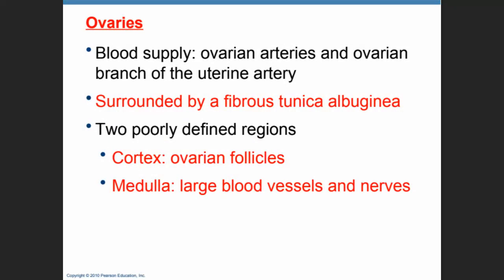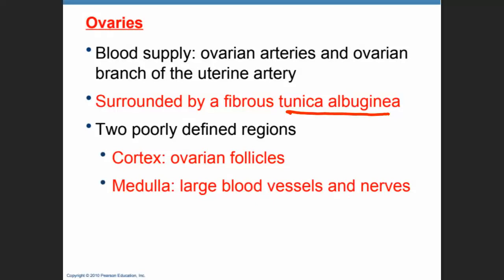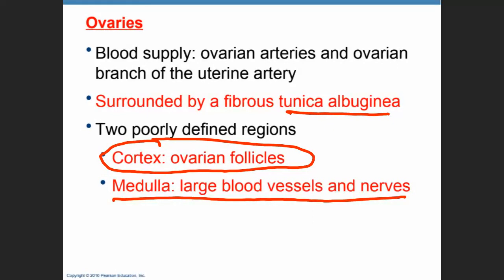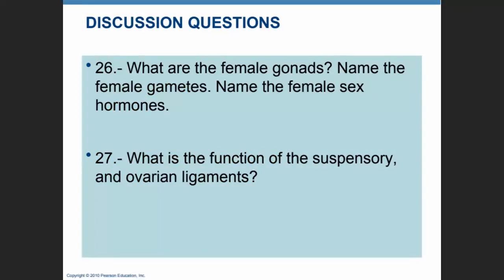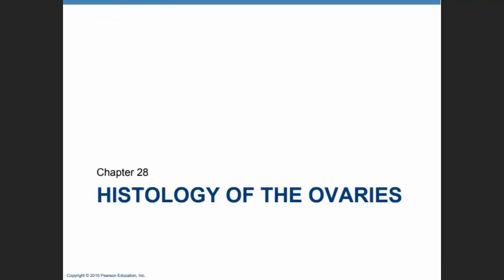The ovaries, similar to the testes, are going to be covered with connective tissue. The deepest of these connective tissues is going to be the tunica albuginea — the same name given to the connective tissue surrounding the testes. The cross section of the ovaries gives us two regions: the outside region is called the cortex, which is where we find the ovarian follicles; and in the medulla, we find the blood vessels and nerves.